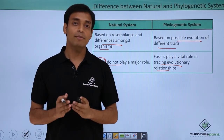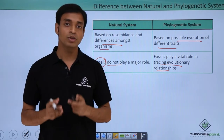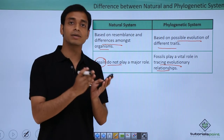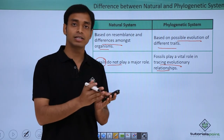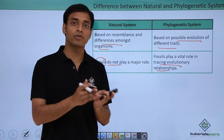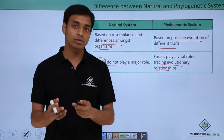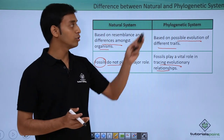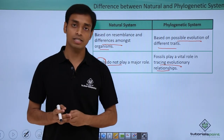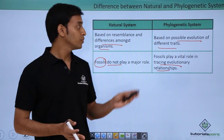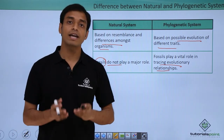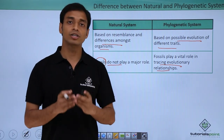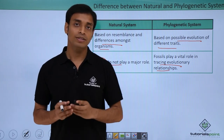In this video we have discussed different types of classification. First, the artificial system of classification, whose drawbacks were overcome by the natural system of classification. Further advancement was made by the phylogenetic system of classification, and we also discussed the differences between the natural and phylogenetic systems. I hope you understood and liked this video. Thank you.